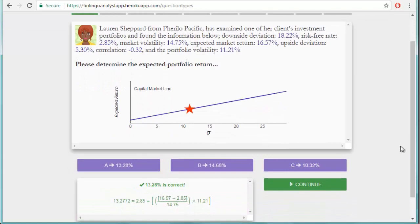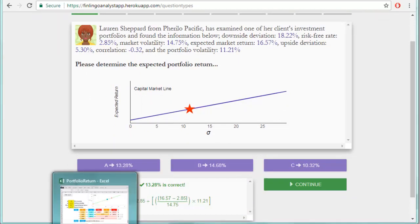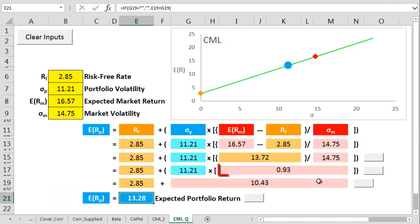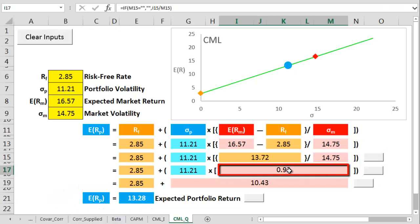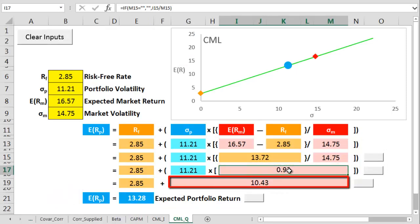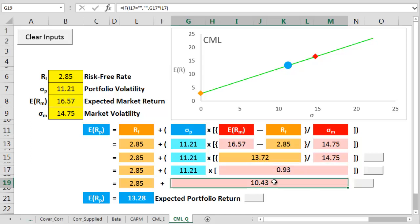That's it for expected returns on the capital market line. But do look out for those questions where you get asked for the market price of risk, which is the slope of the line, or the risk premium, which is everything in addition to the risk-free rate. You sometimes get questions where all three of these are the possible answers.